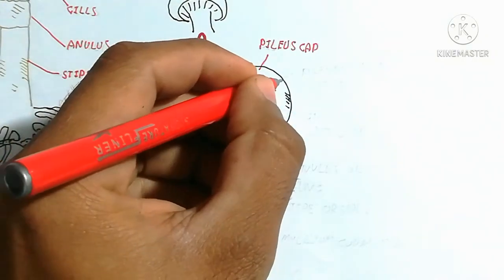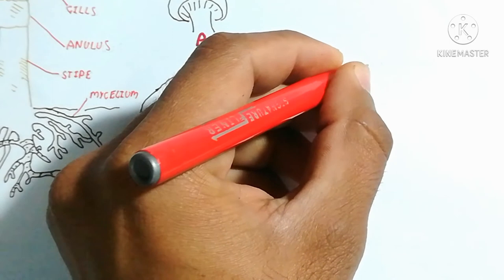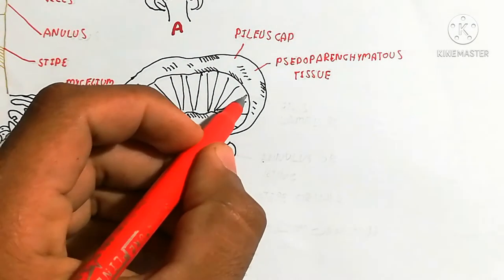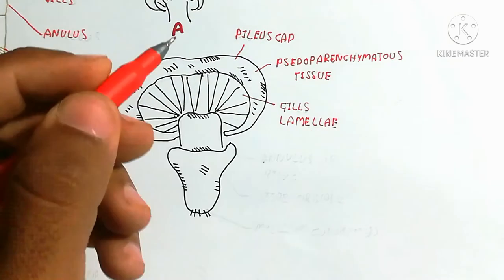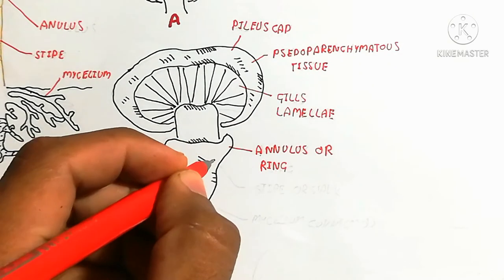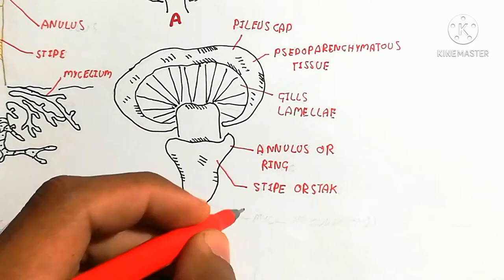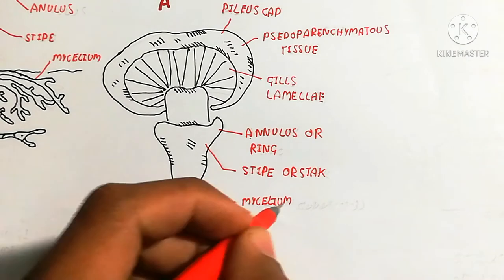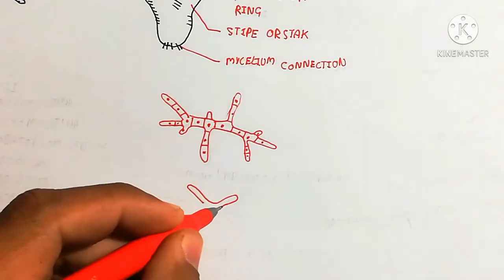Here is the inner vellum, and the pileus or cap will be produced, surrounded by pseudoparenchymatous tissue — which I will discuss later. Here are the gills or lamella, and the annulus or ring which we saw in the previous image. The mycelium connections are present and used for the absorption of nutrition from decomposing organic material.